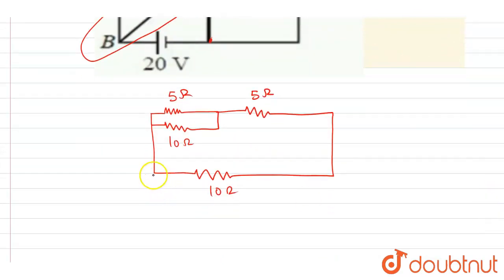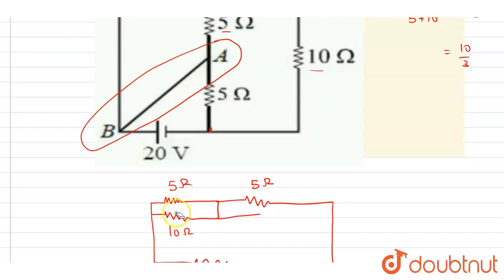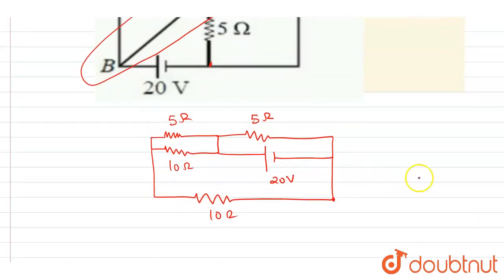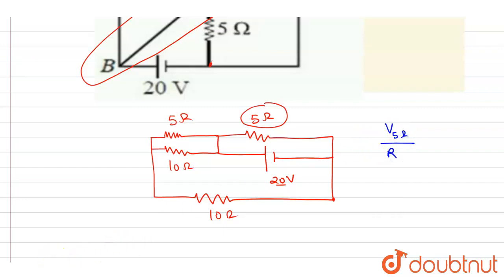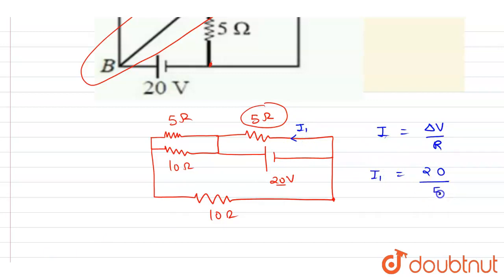20 volts are connected in parallel and this is connected across the 5 ohm resistor. So this is the diagram with 20 volts. Since 20 volts is the potential drop directly across this 5 ohm resistor, the current through it — let's call it I1 — is simply 20 divided by 5, which equals 4 amperes, flowing in this direction.